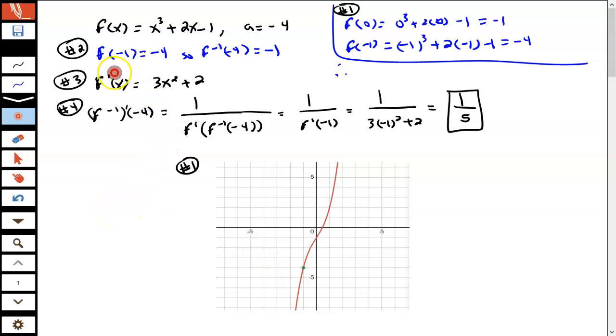Now once we find that, if we know that f of negative 1 equals negative 4, then the inverse of the function at negative 4 would equal negative 1. So that's some key information to use in step 4.